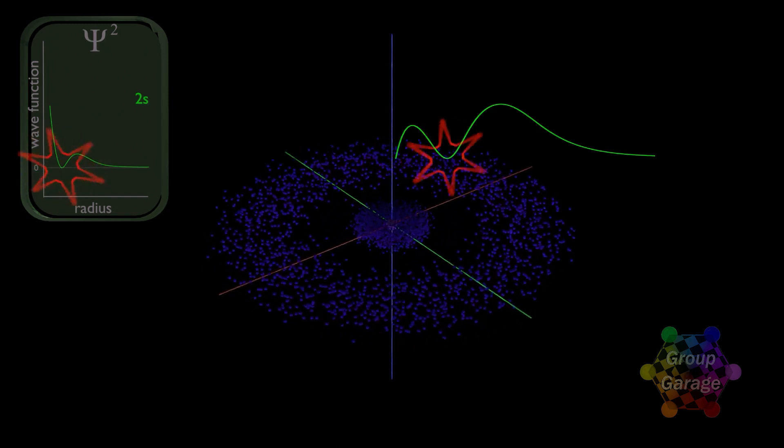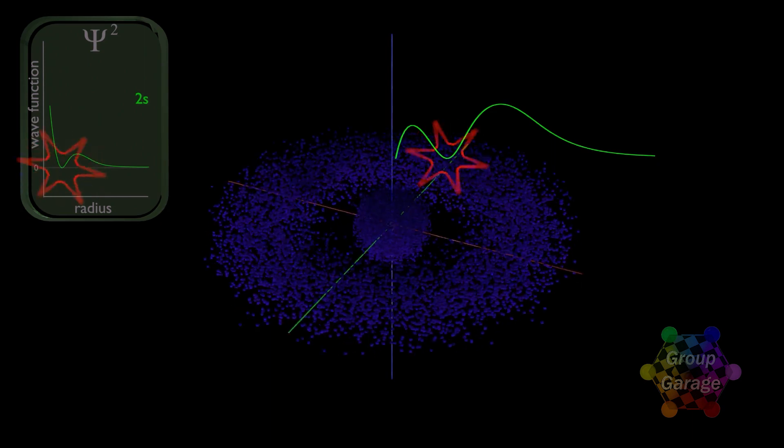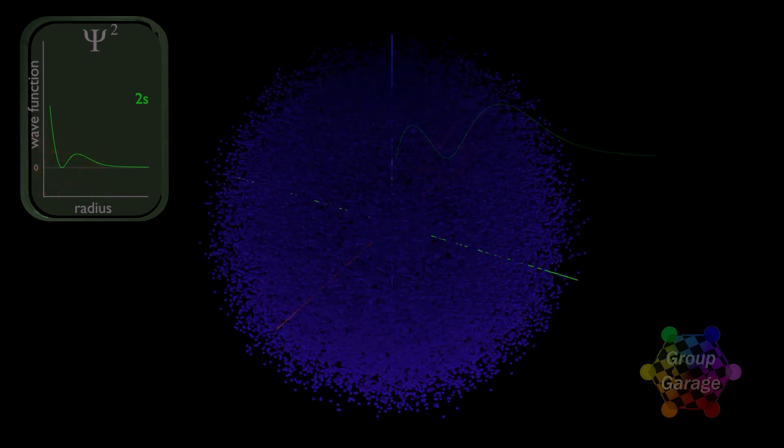Remember, this distribution is spherically symmetrical, so the radial probability of finding an electron at any given radius is like a ball, the 2s orbital.